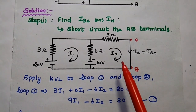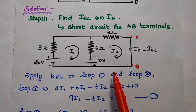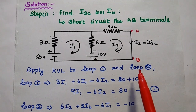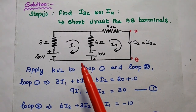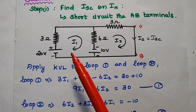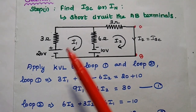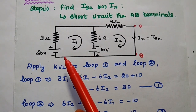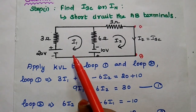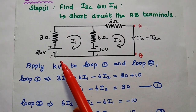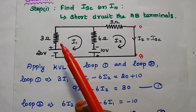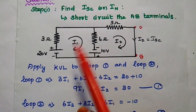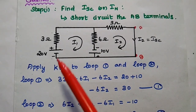Next, we find I2 by applying Kirchhoff's Voltage Law to Loop 1 and Loop 2. KVL states that the sum of voltage rises is equal to the sum of voltage drops in a closed path. We apply KVL to the first loop, where the voltage source represents the voltage rise, and voltage drops occur across the 3 ohm and 6 ohm resistors.